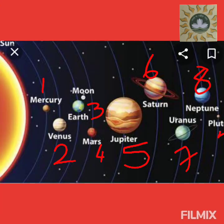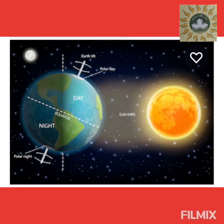The second important thing is, earth is the third planet in the solar system. As you can see — Mercury, Venus, and then earth. So earth is the third planet in the solar system.